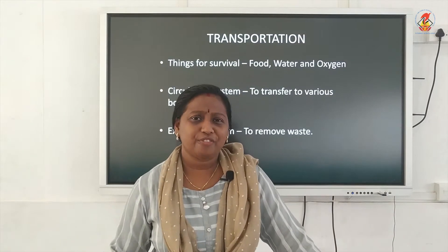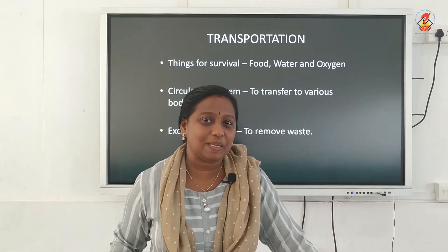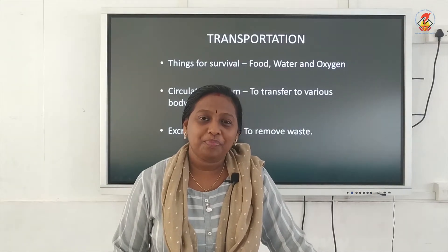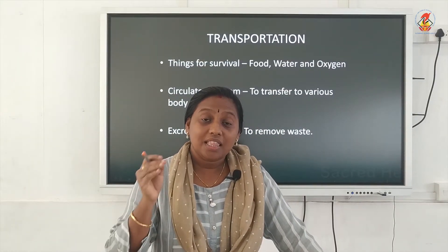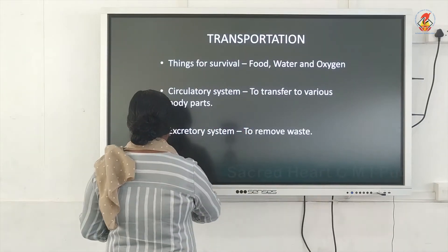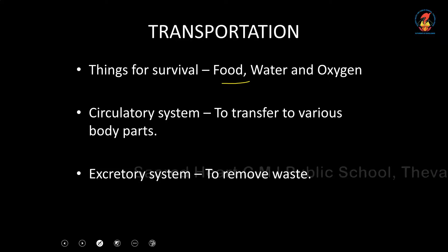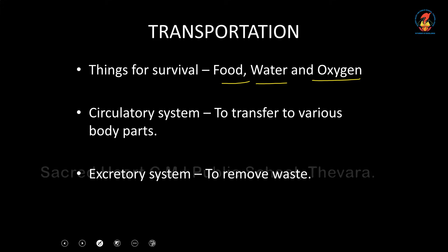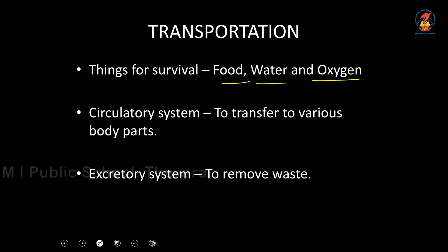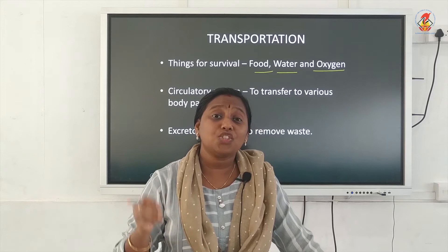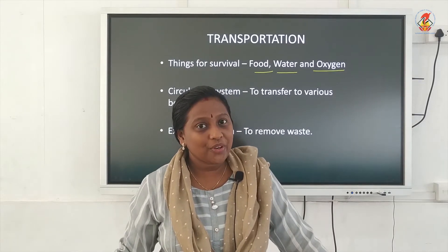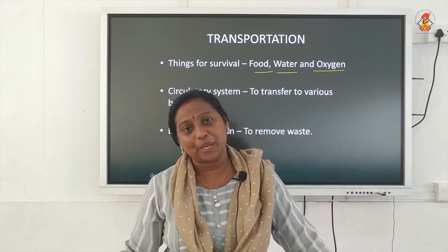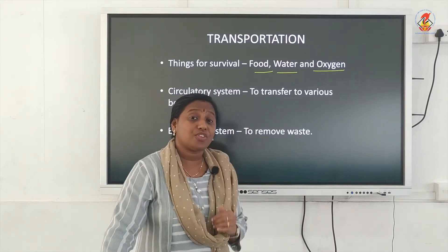Transportation — what do you mean by transportation? For what purpose do we have such a system in our body? Actually in our body, there are so many substances which have to be transported from one part to the next. These substances include food, water, and oxygen. We take in food and water into our body, and oxygen enters our body through our respiratory system. All these things have to be transported to their respective places, to each and every cell in our body. Hence we require a transportation system in our body.